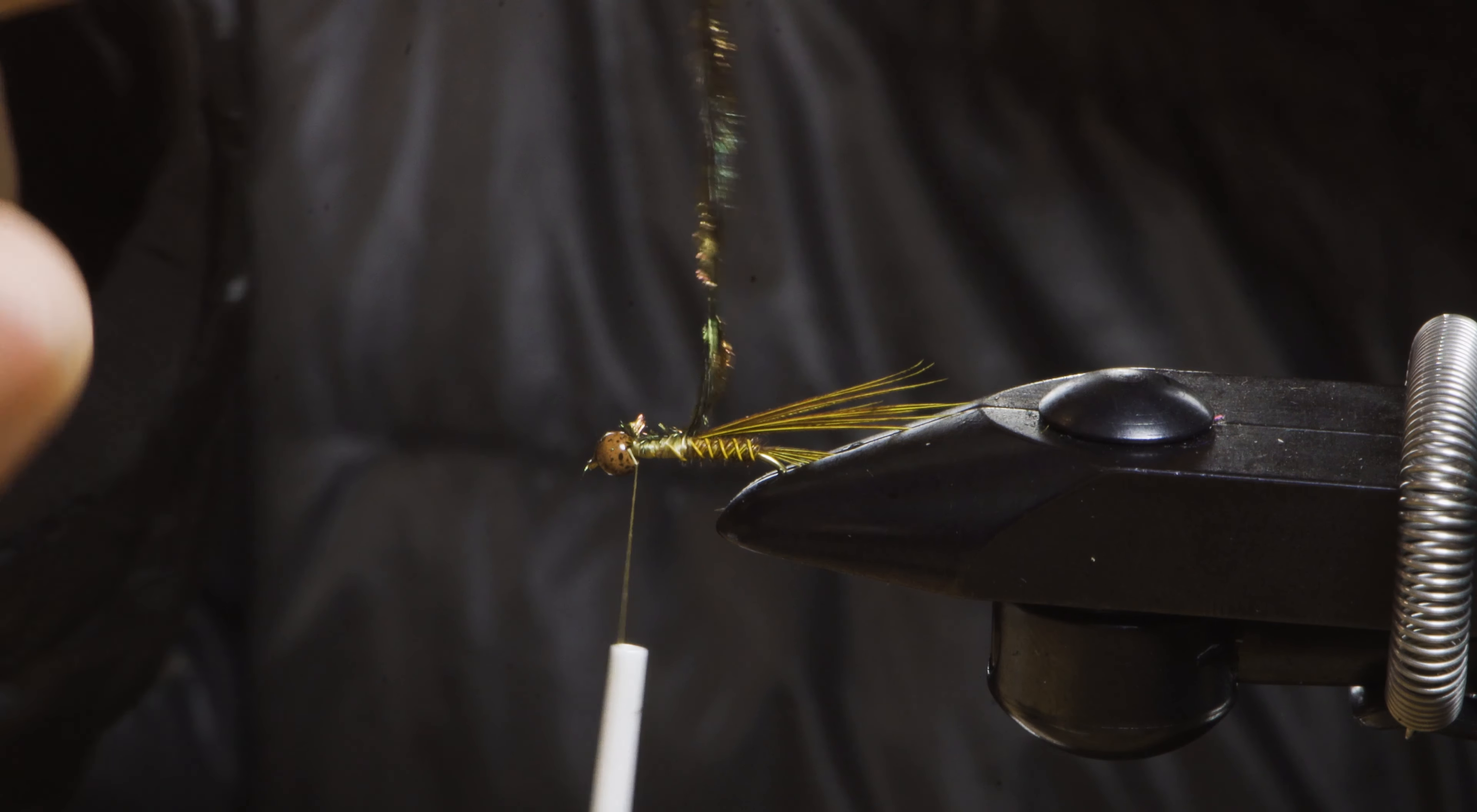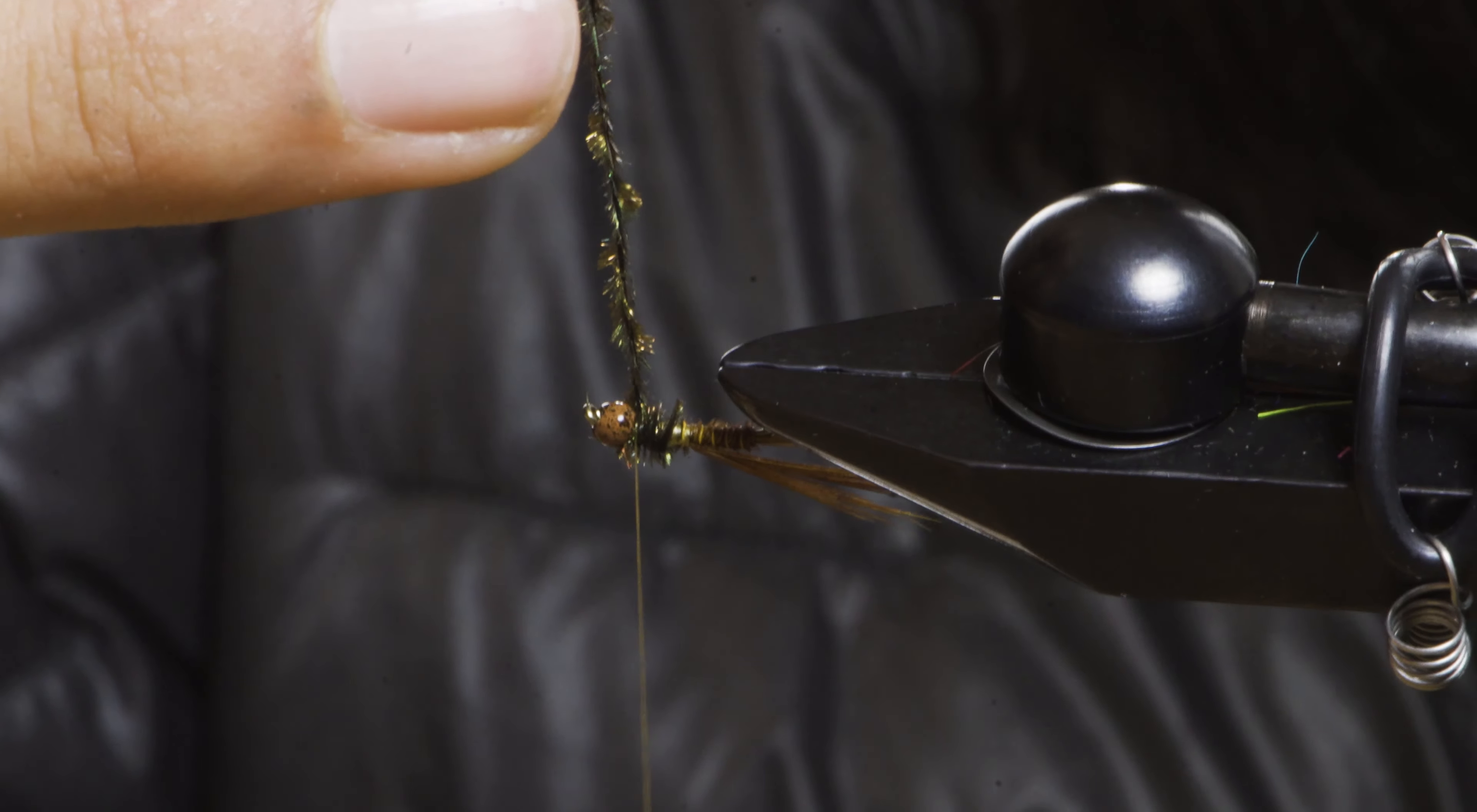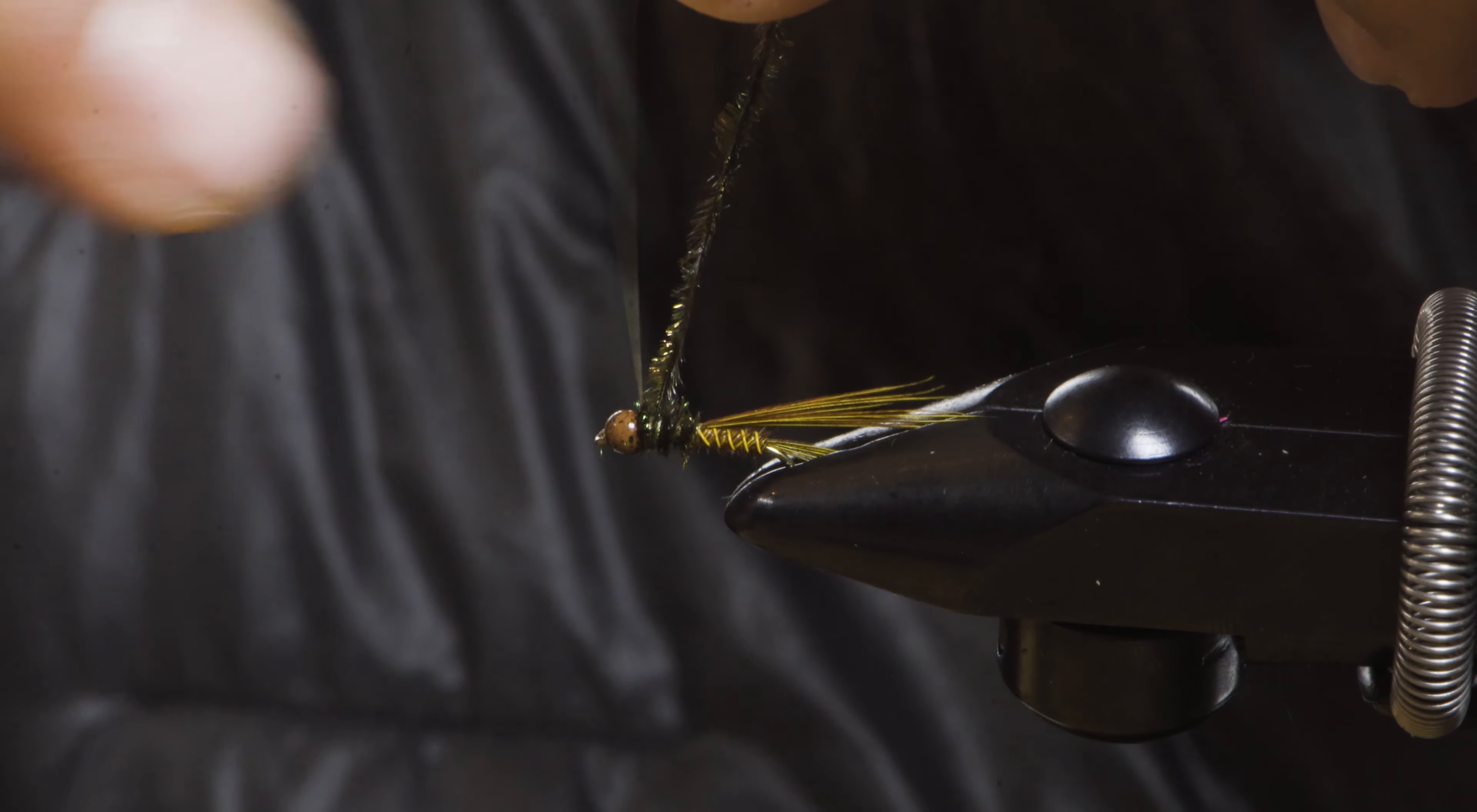So I'm just going to start spinning my hurl so that the quill reinforces everything. Now I'm going to go ahead and wrap that. Get yourself a little more thread on the end if you need. I like to add a little bit of bulk right behind the bead to keep it from sliding.